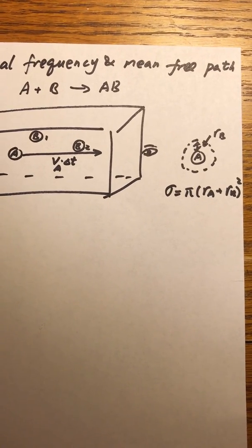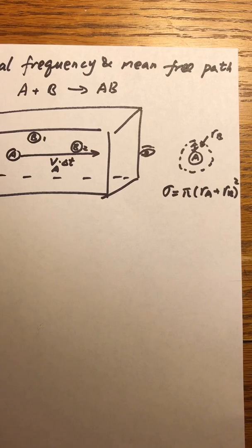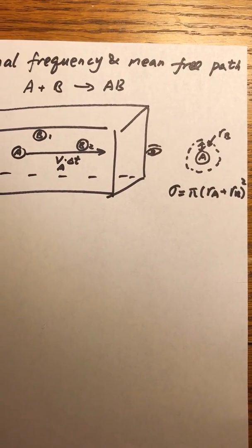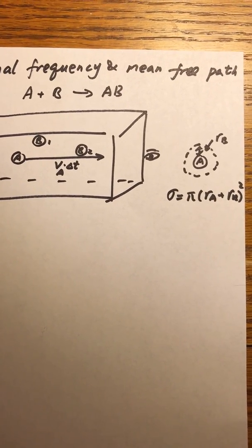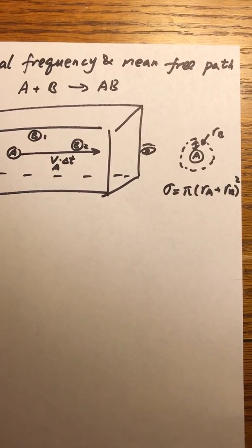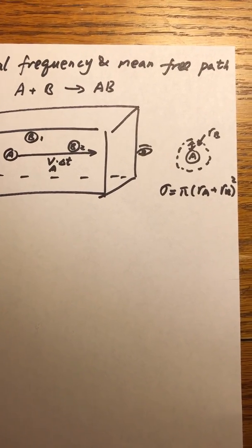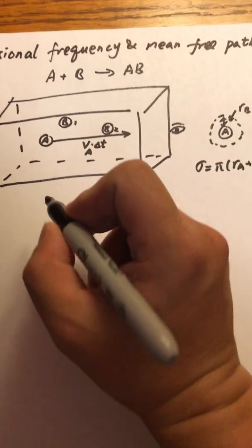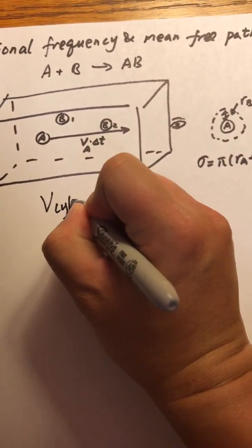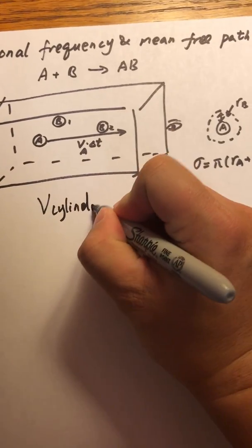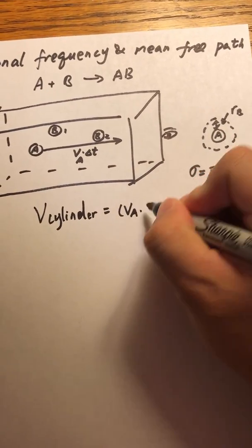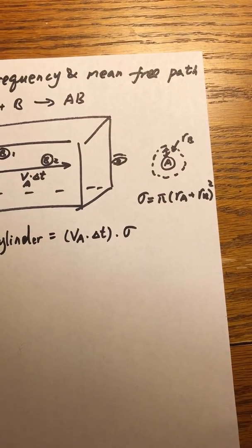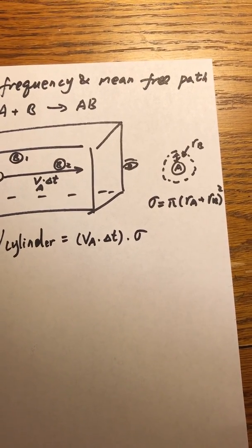So the problem of collision frequency is simplified to counting the number of B molecules whose center is inside this dashed circle. Because A has traveled a distance of V sub A times delta T, we can imagine this trajectory as a cylinder with a length of VA times delta T and a bottom surface area of sigma. The volume of the cylinder is the speed of A times delta T times sigma, where sigma equals pi times (RA plus RB) squared.